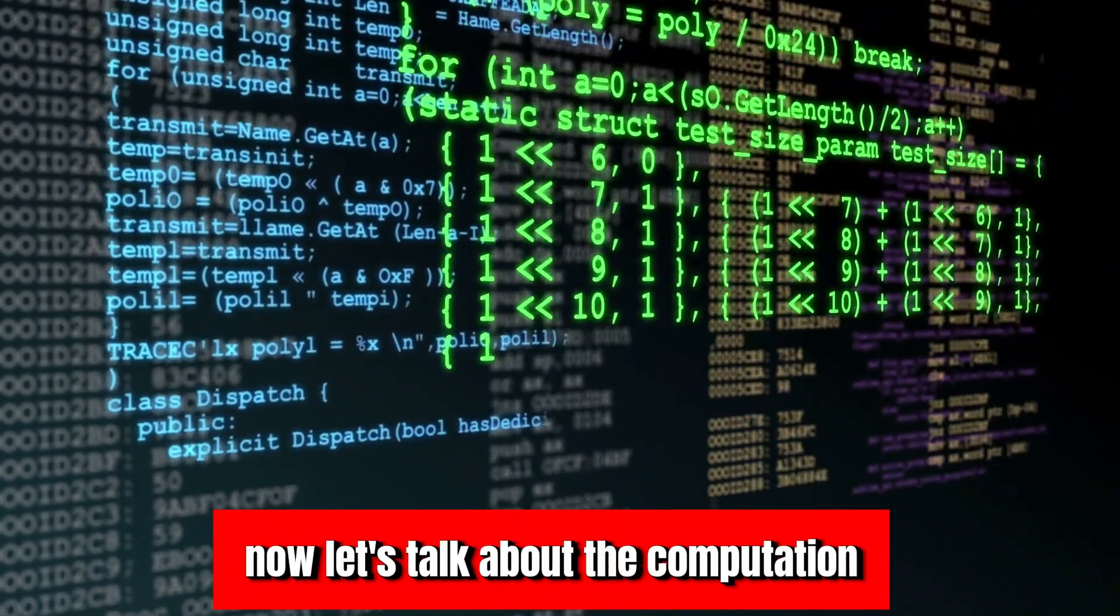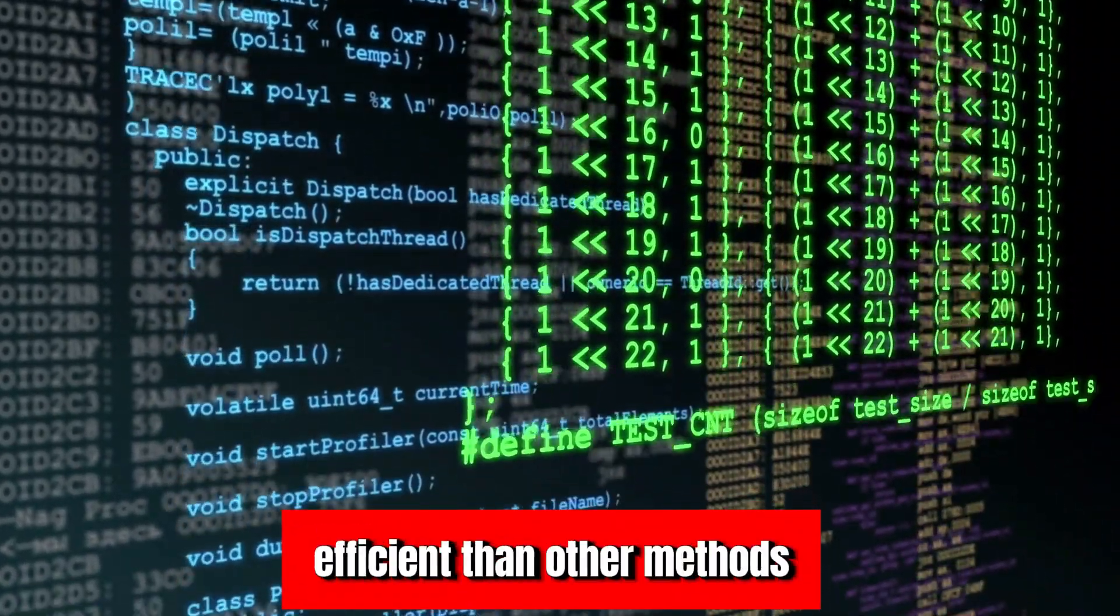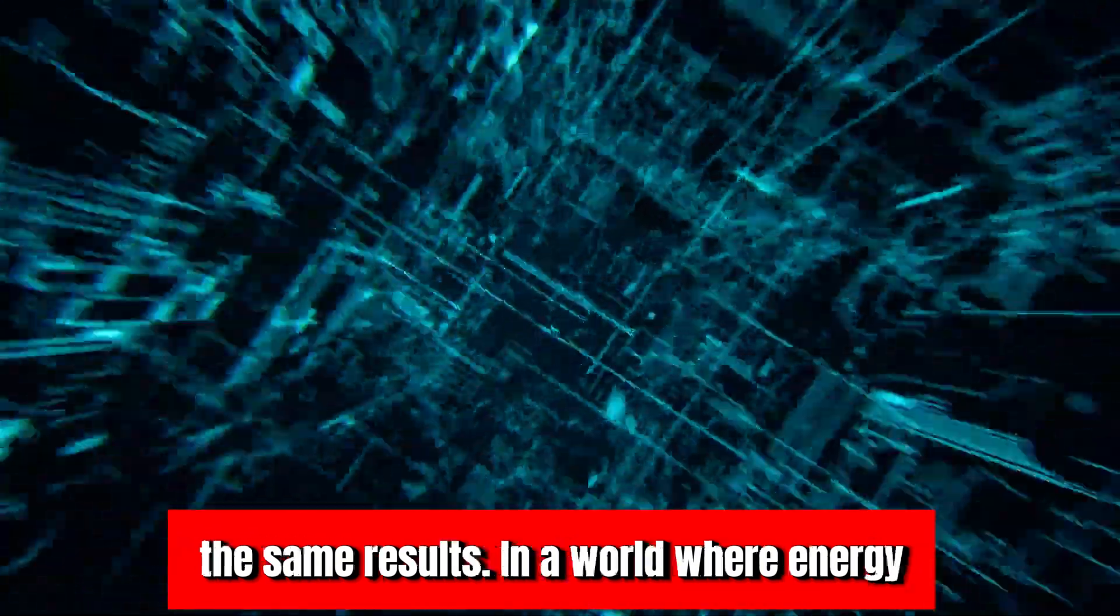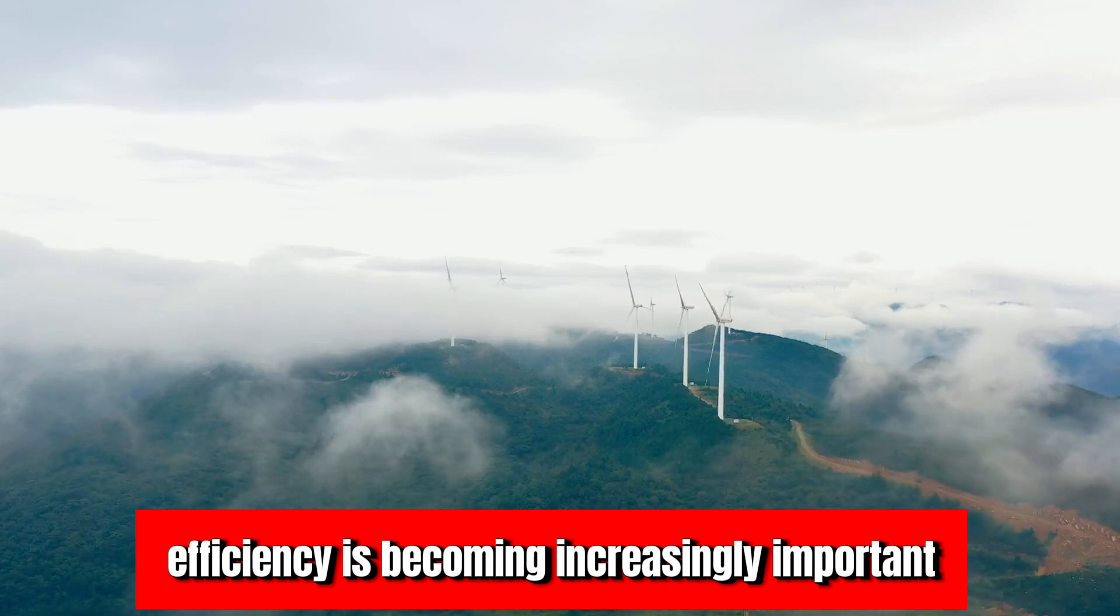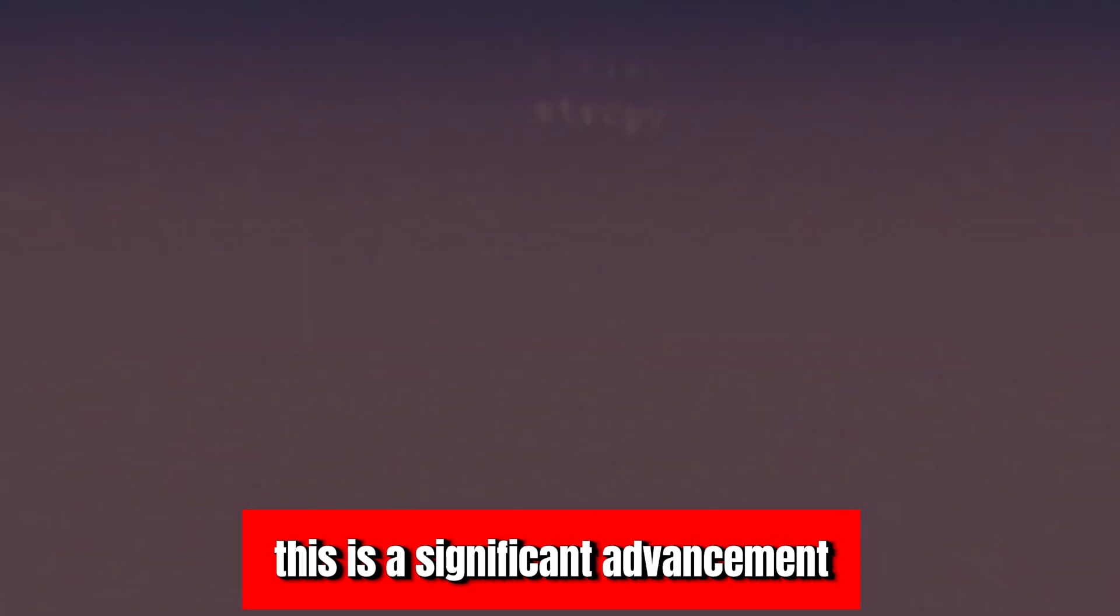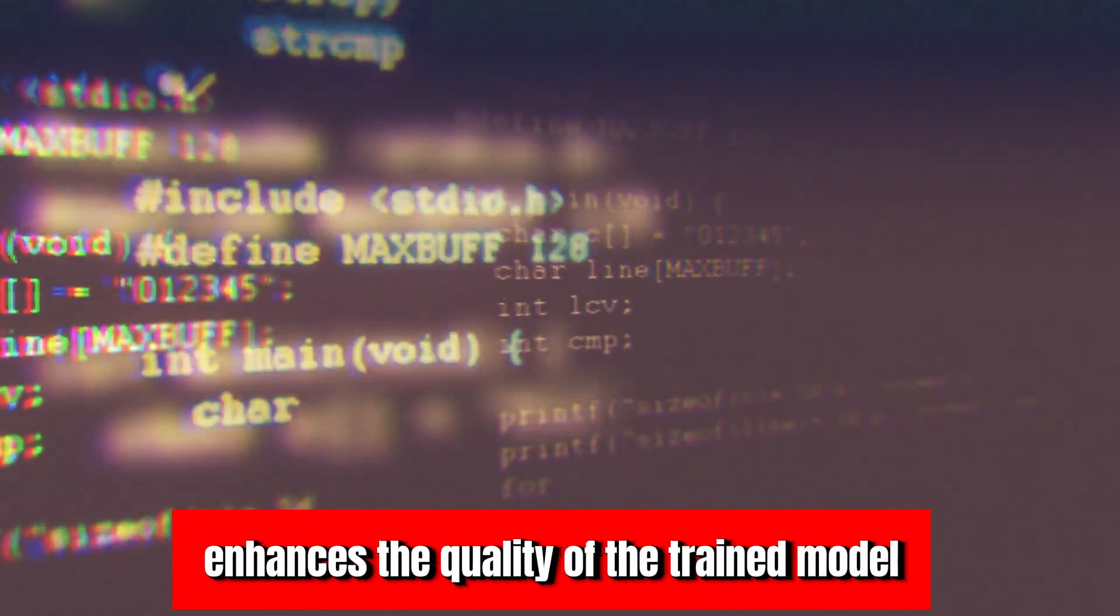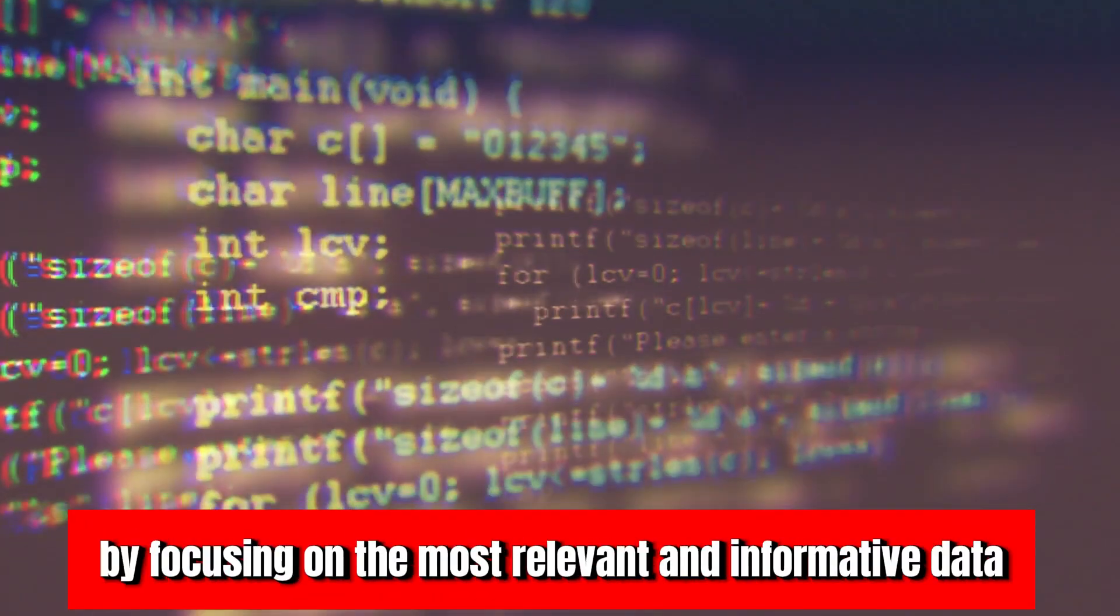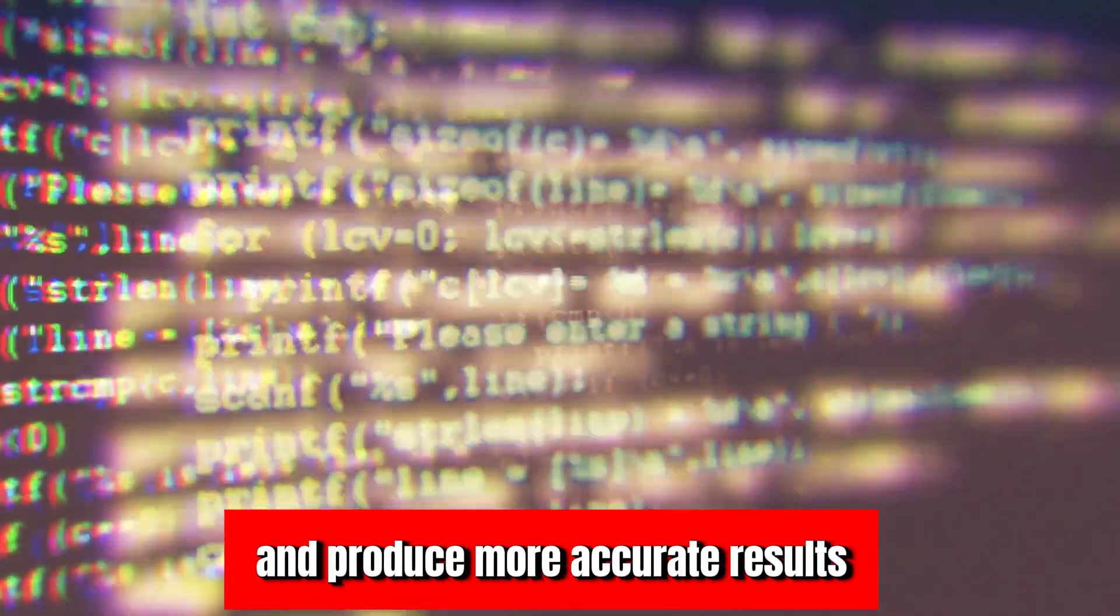Now let's talk about the computation. JEST is 10 times more power efficient than other methods. This means that it requires 10 times less computational power to achieve the same results. In a world where energy efficiency is becoming increasingly important, this is a significant advancement. But the benefits of JEST don't stop there. The method also enhances the quality of the trained model. By focusing on the most relevant and informative data, the model can learn more effectively and produce more accurate results.